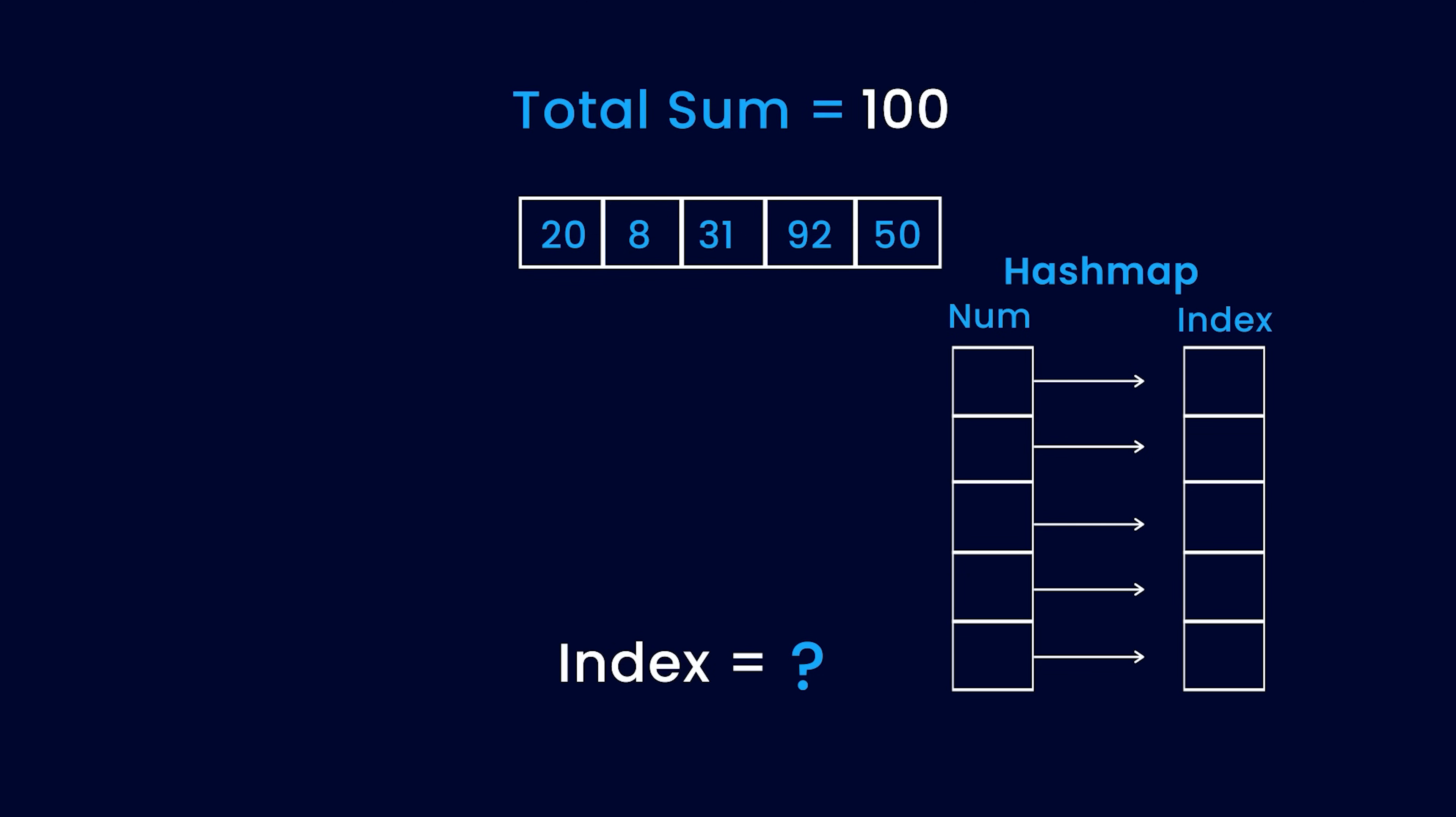For it, all you want is the index of 100 minus the current number in the array quickly without doing a lot of work. If you have a hash map that contains all the numbers as key and their index as value, you can quickly lookup the index of 100 minus current number.